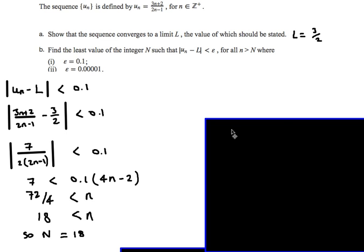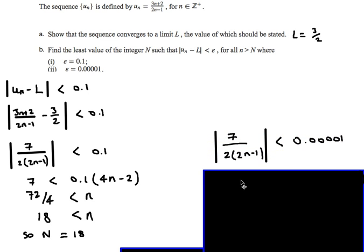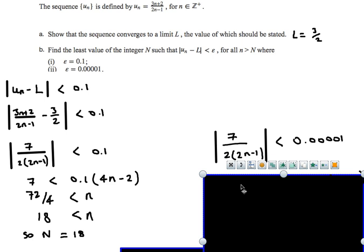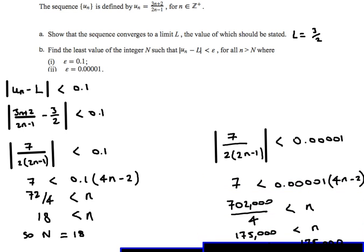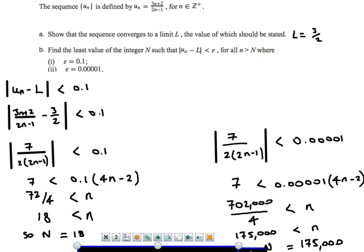For the second part, we do exactly the same but with a different value for epsilon — this time it's less than 0.00001. Rearranging in the same way, we get n greater than 175,000. Therefore capital N, the boundary, is 175,000.